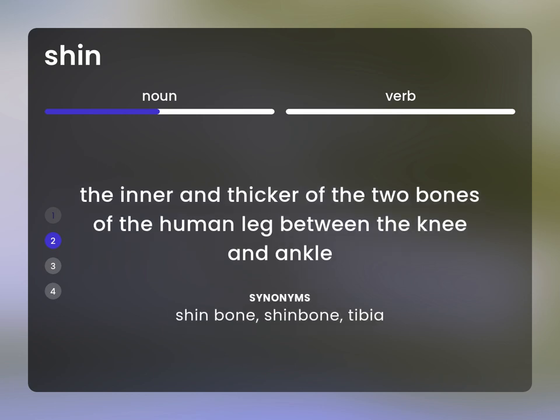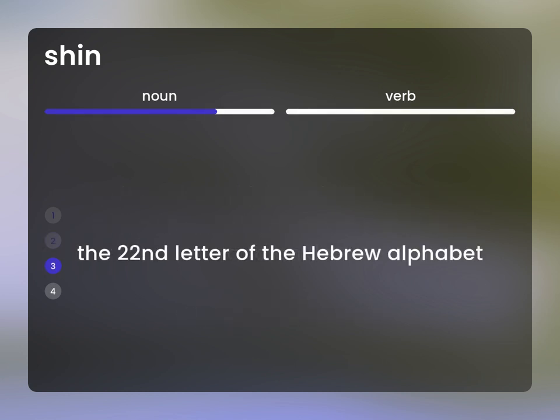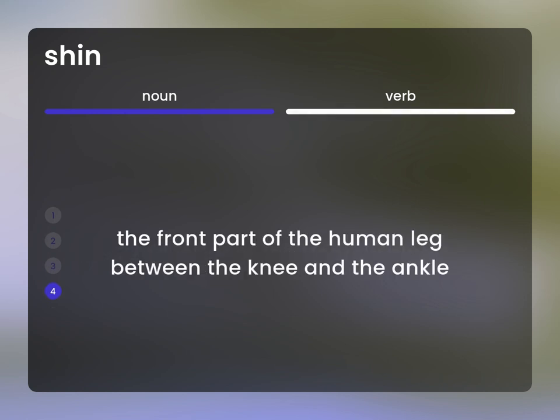Tibia. The twenty-second letter of the Hebrew alphabet. The front part of the human leg between the knee and the ankle.